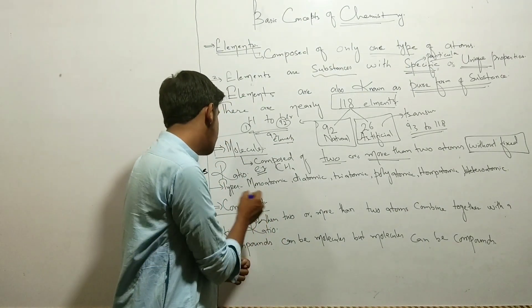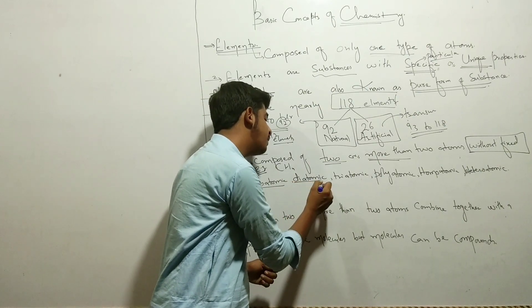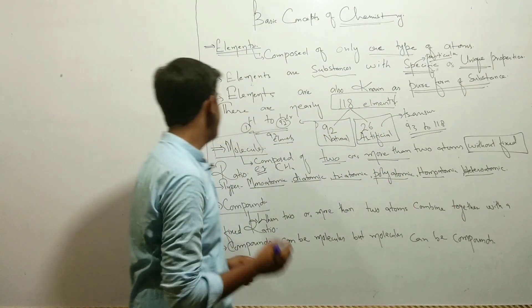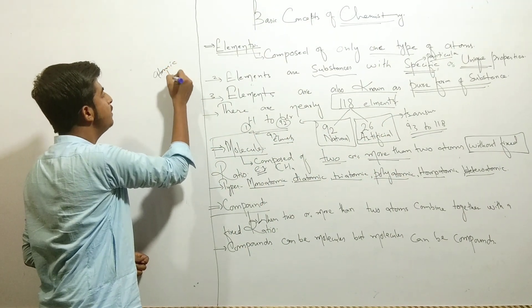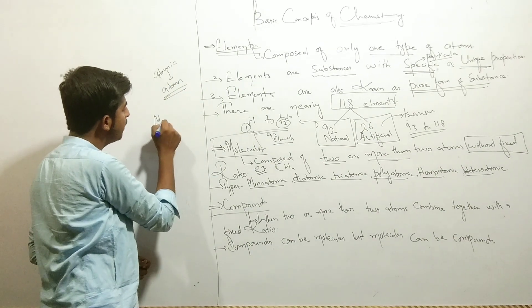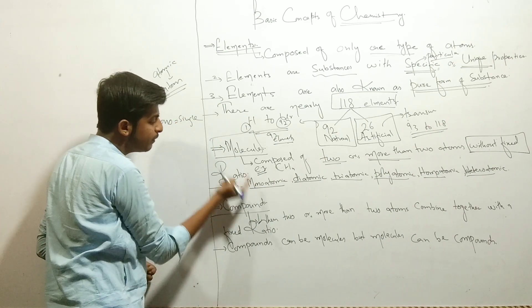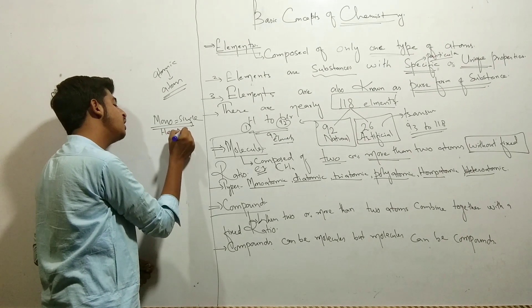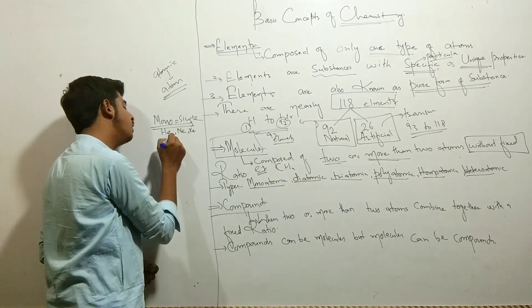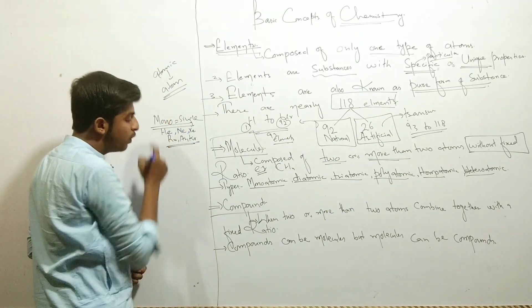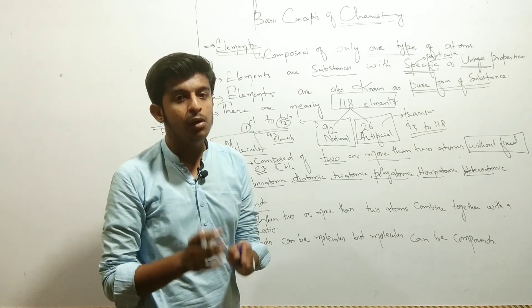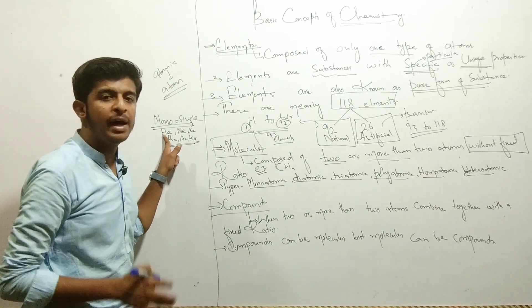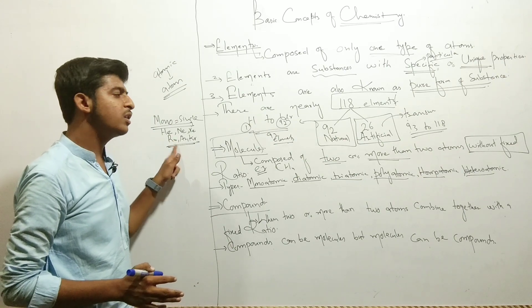There are types: monoatomic molecule, diatomic molecule, triatomic molecule, polyatomic molecule, as well as homo and heteroatomic molecules. Monoatomic means single atom. Mostly noble gas elements like helium, neon, xenon, radon, argon, krypton are monoatomic because their octet and duplet are complete.